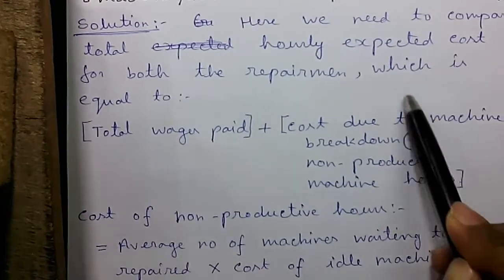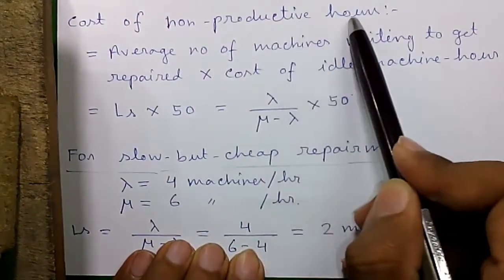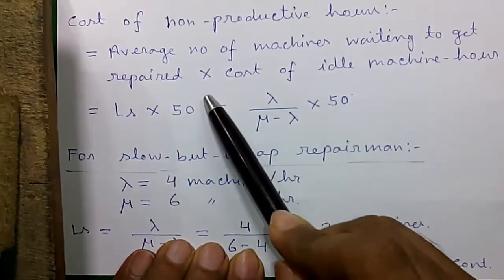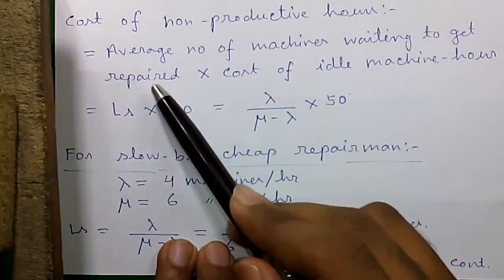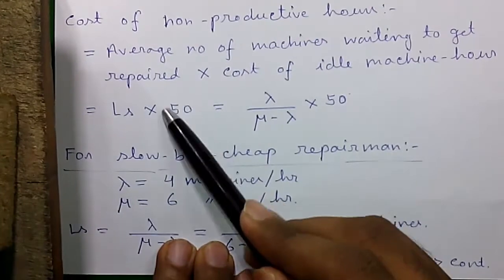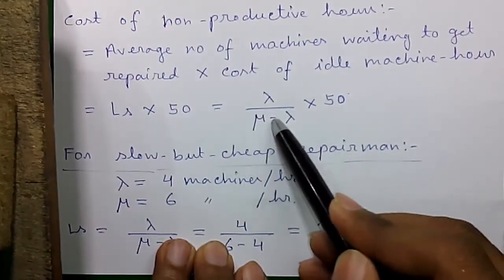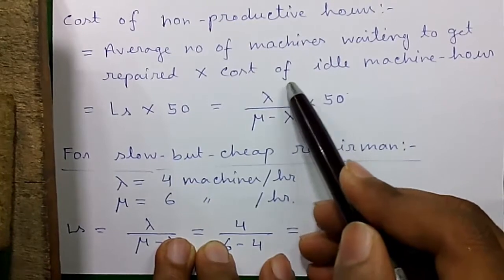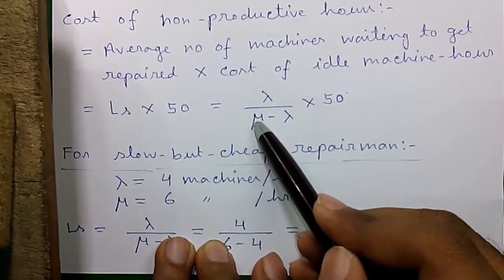So we have to also consider that along with the wages paid to the repairmen. Now the cost of non-productive hours is given by average number of machines waiting to get repaired times cost of idle machine hour. So Ls equals to lambda divided by mu minus lambda where lambda is the average rate of machine breakdown which is 4 machines per hour and mu is the repairing capacity of the repairmen.